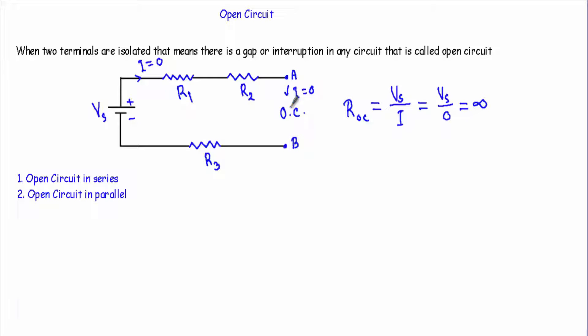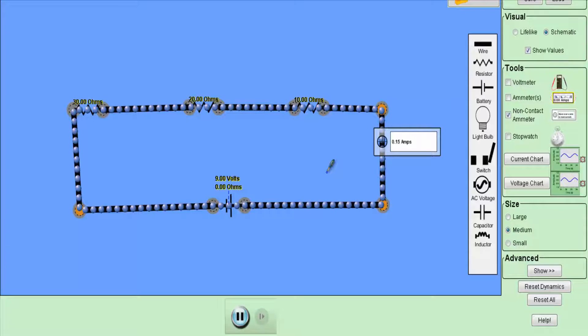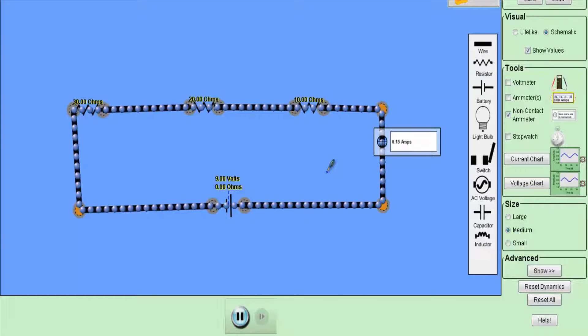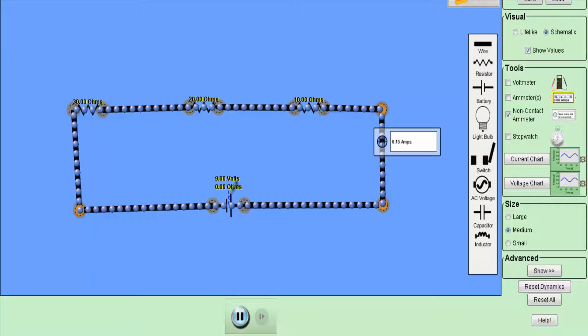An open circuit may result due to component failure or disintegration of the conducting path, such as a breaking wire. Now let me show you the open circuit in the case of a series circuit and in the case of a parallel circuit. Let me start with the open circuit in series.